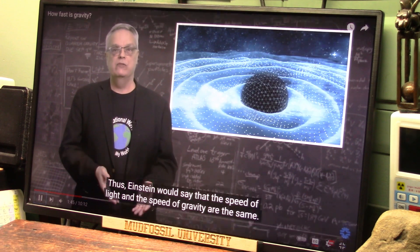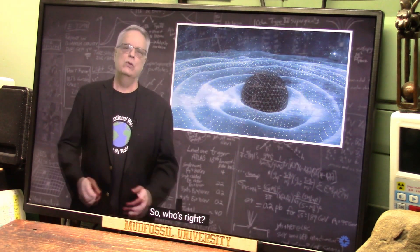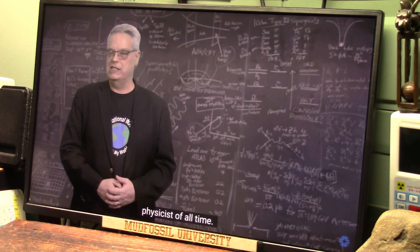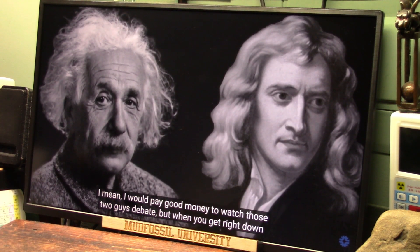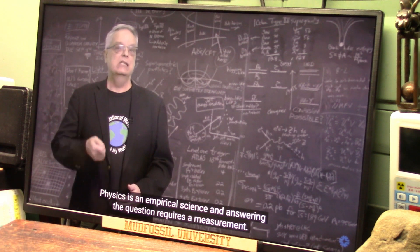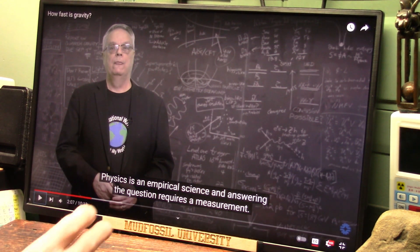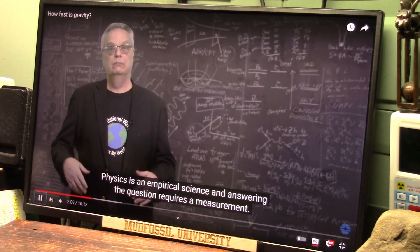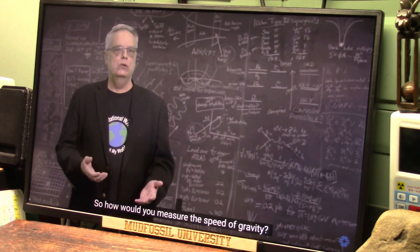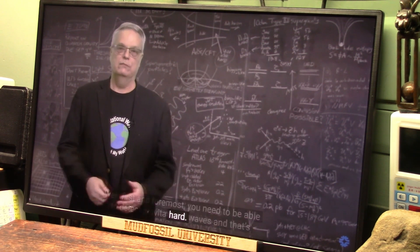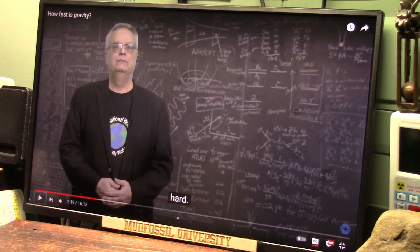Let's say that the speed of light and the speed of gravity are the same — so who's right? Einstein and Newton are both strong contenders for most influential physicist. But physics is an empirical science, and answering a question requires a measurement — at least you need to know what you're looking at. So how would you measure the speed of gravity? First and foremost, you need to be able to detect gravitational waves, and that's hard. Actually, it's not that hard, Don.